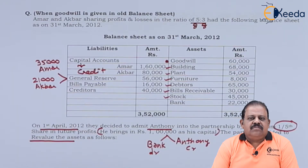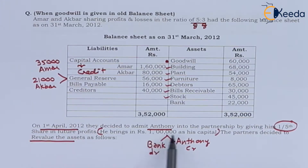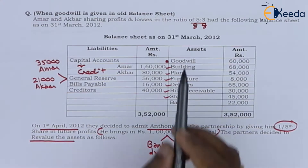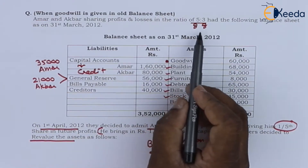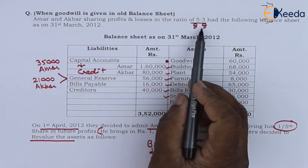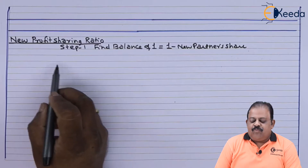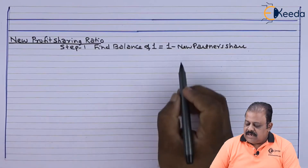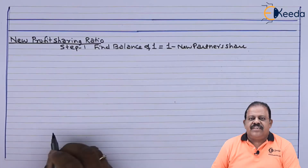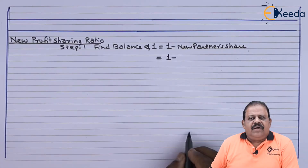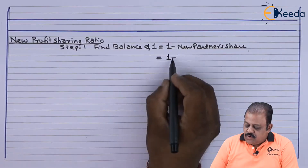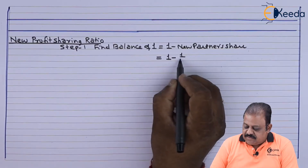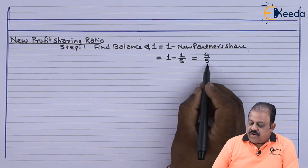Let us first work out the new profit sharing ratio. On 1st April, Anthony is admitted for one-fifth share. Amar and Akbar were sharing profits in the ratio of 5 is to 3. Step 1: find balance of 1, that is 1 minus new partner's share. Anthony is admitted for one-fifth share, so 1 minus 1/5 equals 4/5.